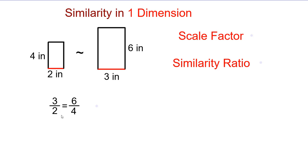First, let's look at similarity in one dimension — essentially everything we've done so far. We have two rectangles that are similar, so their sides are proportional. The corresponding sides: two goes to three just as four goes to six. We set up the scale factor starting with the image on the right — three over two — and cross-multiply to verify: three times four is 12 and two times six is also 12, confirming the sides are proportional and the shapes are indeed similar.